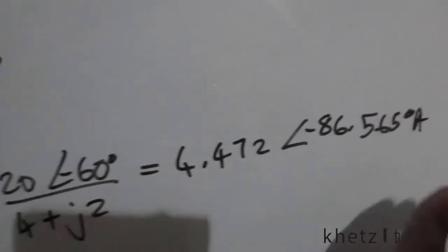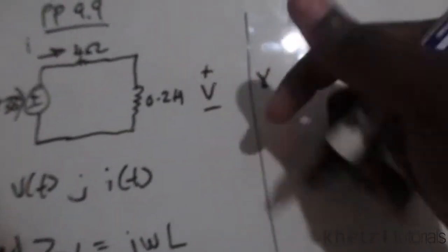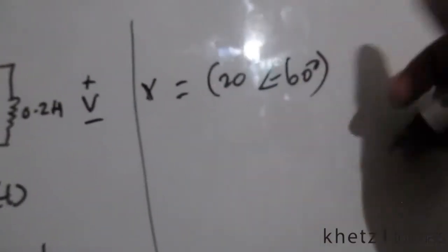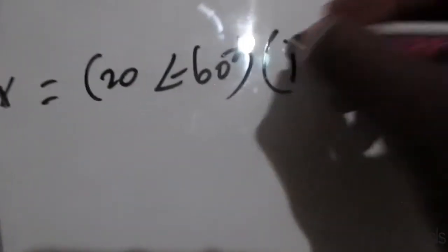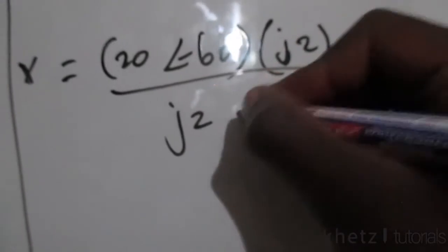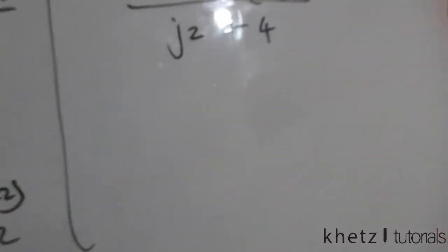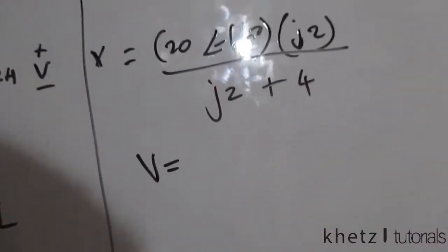To find v(t), the voltage across the inductor, we use voltage division. The voltage across the inductor equals the total voltage, 20 at negative 60 degrees, multiplied by the impedance of the inductor, j2, then divided by the total impedance, 4 plus j2.